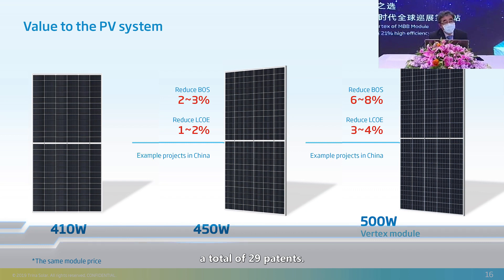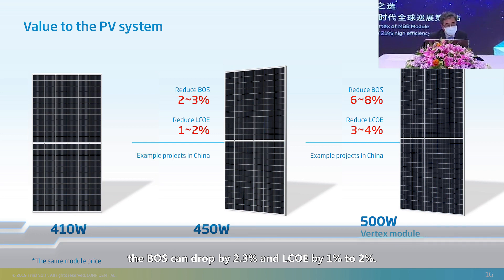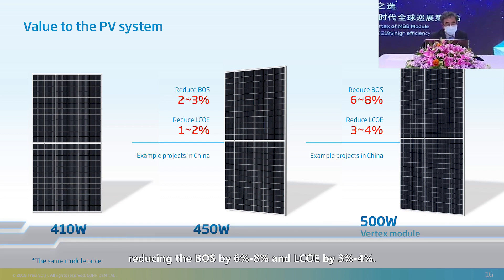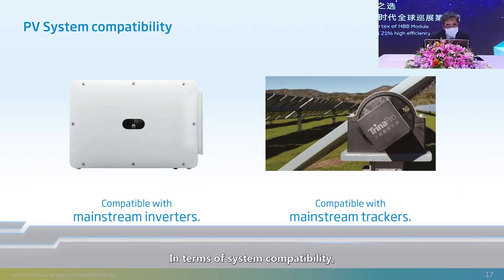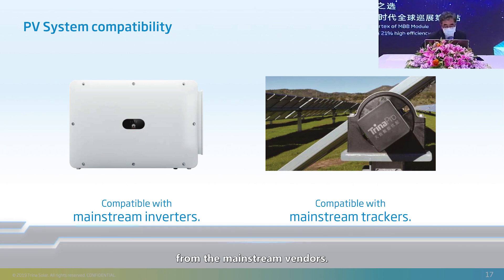On the client side, this new product will lead to an obvious decrease in LCOE. For 450-watt modules, BOS can drop by 2.3% and LCOE by 1% to 2%. The contribution of 500-watt modules is more obvious, reducing BOS by 6% to 8% and LCOE by 3% to 4%. Reducing LCOE is one of our most important goals. In terms of system compatibility, the product is compatible with regular central inverters or string inverters. Conventional fixed trackers can be used directly, and we are compatible with mainstream tracker models. There is no technical barrier — it is fully compatible.